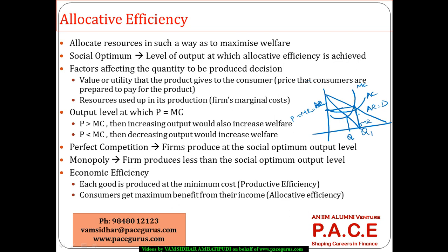If the monopolist were to produce at the social optimum level, in some cases their average cost is lesser so they can make a profit, but in other cases the average cost may be much higher and they incur a loss. If their average cost is actually increasing, they may not be willing to operate at that particular quantity. It is not a profit-maximizing level of output for them, so they generally do not produce at the social optimum output level.